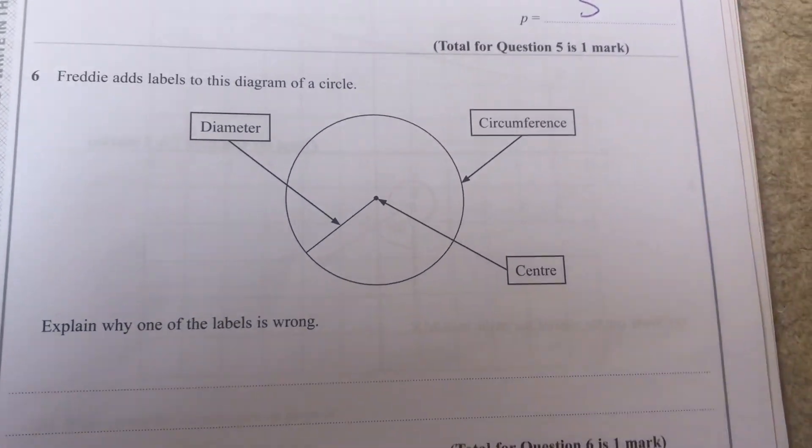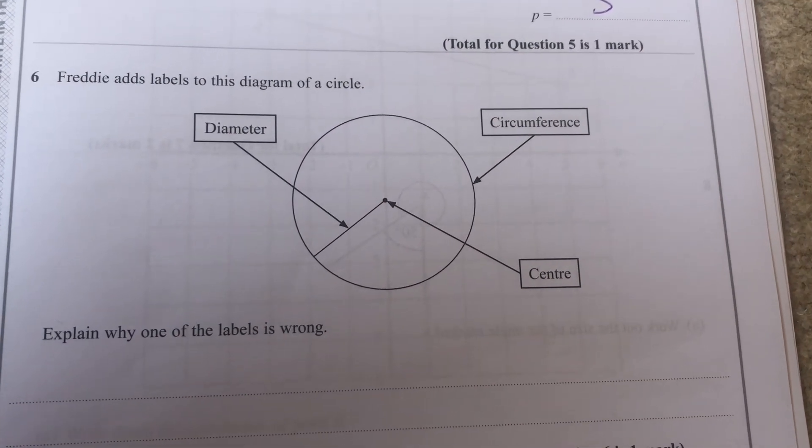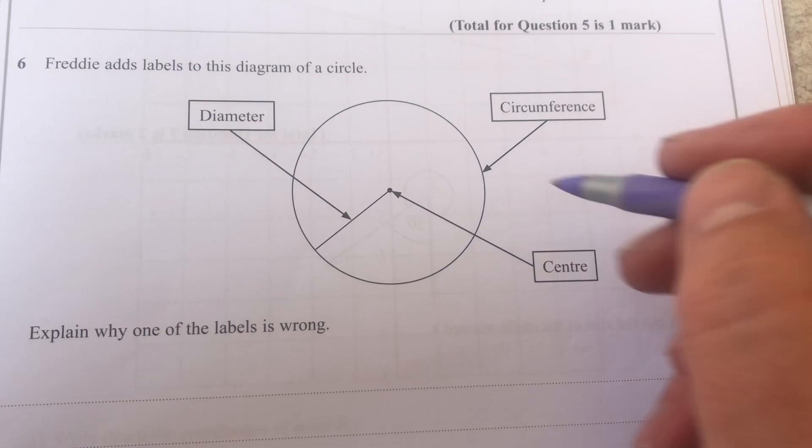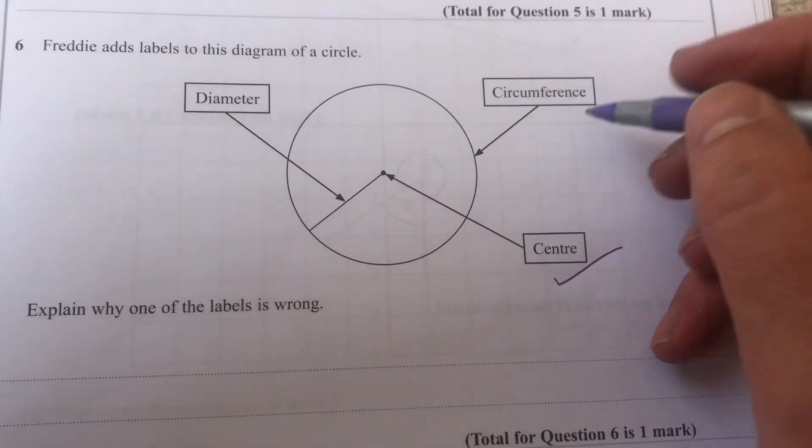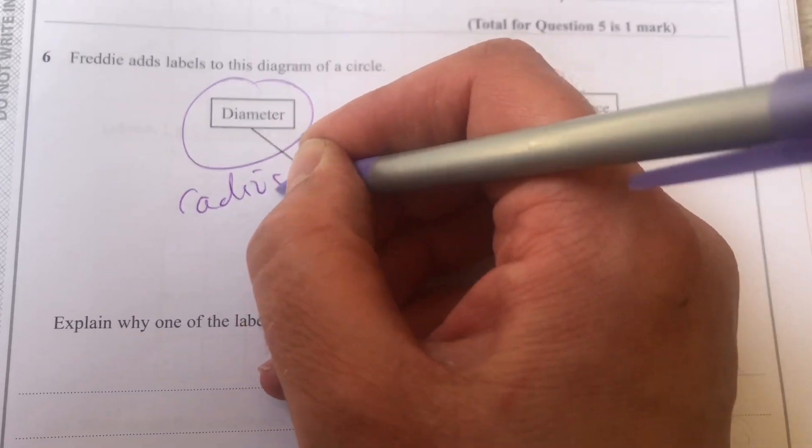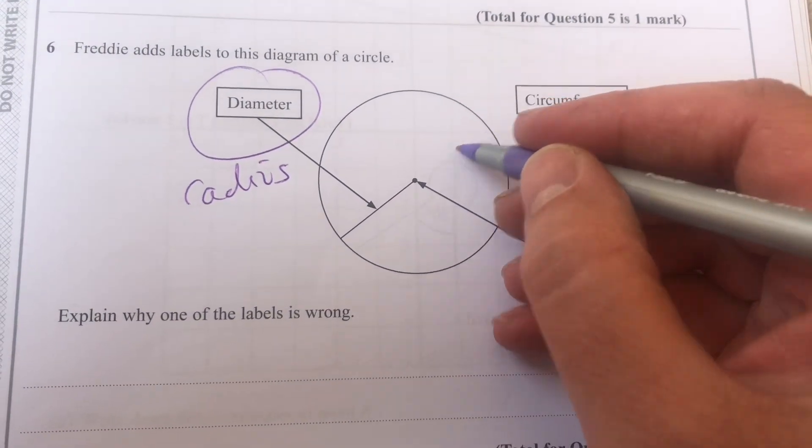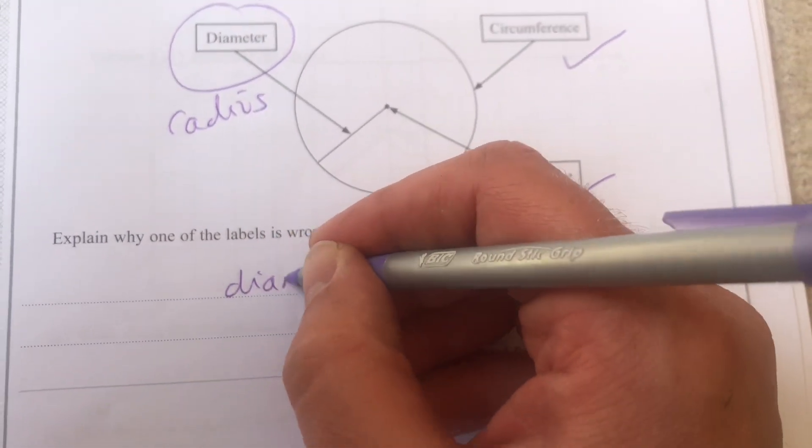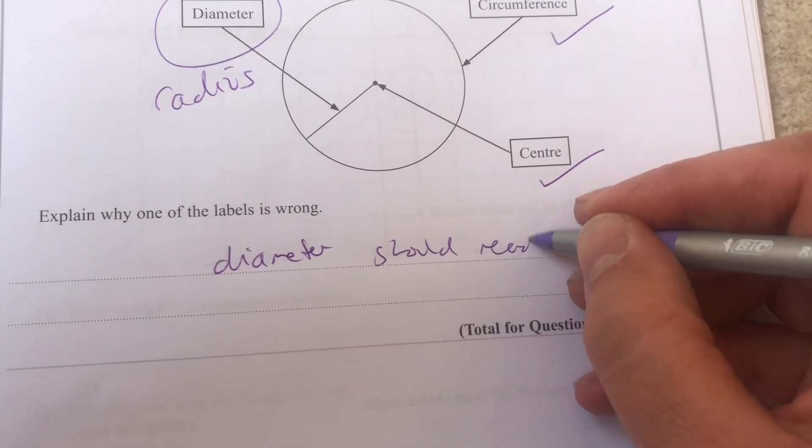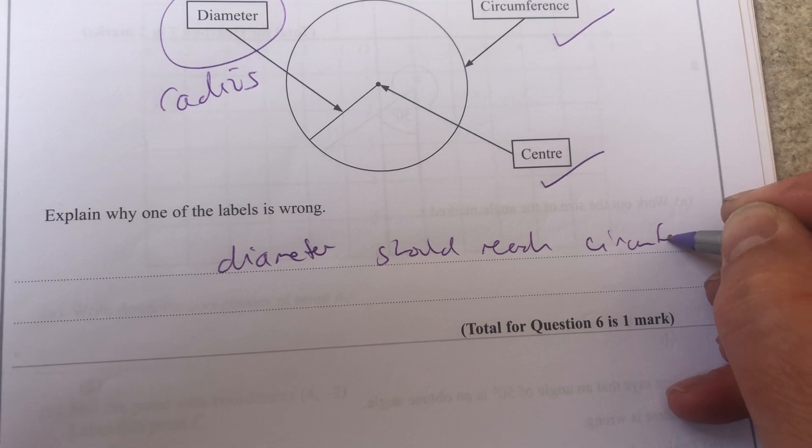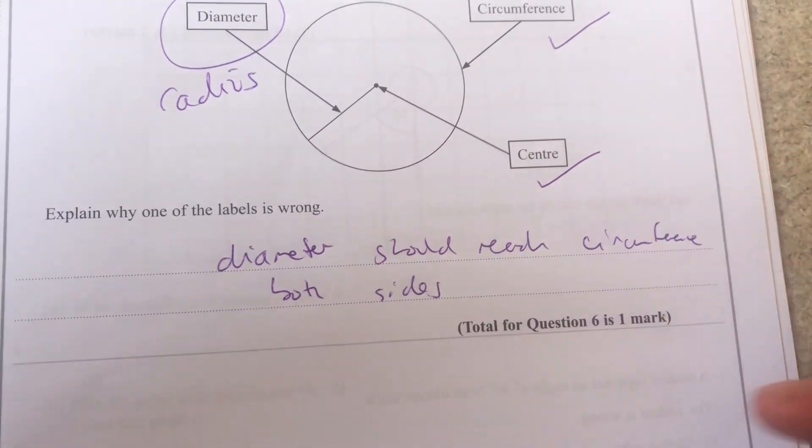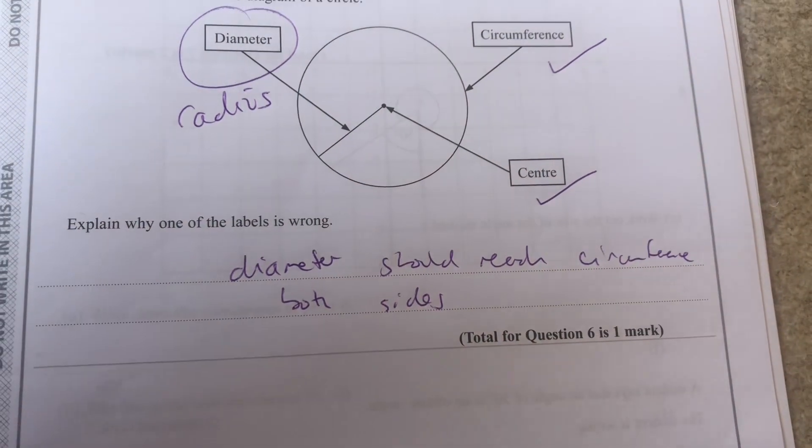Here we have some labels on a circle that Freddie's added. He's labeled the diameter, the circumference, and the center. That's correct, that's correct, but that one is not. That should be the radius - the diameter would go all the way through the circle. The correction needed is: that label should say radius.